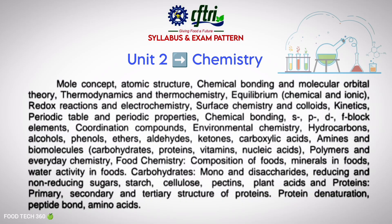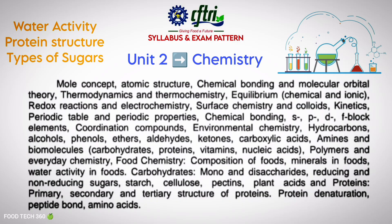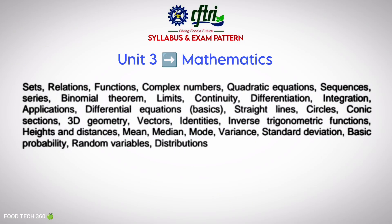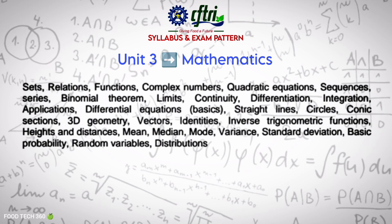You'll also need to know some food chemistry like water activity, protein structure, and types of sugars. Unit 3 is Mathematics. In this unit you should focus on algebra, calculus, trigonometry, probability, and statistics.